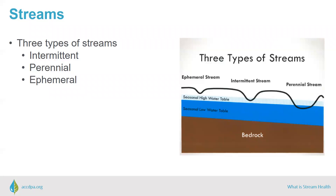Intermittent streams are those where groundwater provides stream flow for part of the year. These stream beds are above the water table for part of the year, so runoff from rain supplements stream flow, but intermittent streams may dry up when the groundwater table drops below the elevation of the stream bed during dry periods. Perennial streams are streams with continuous flow throughout the year. You can see the stream bed dips into the seasonal low water table there in the figure.